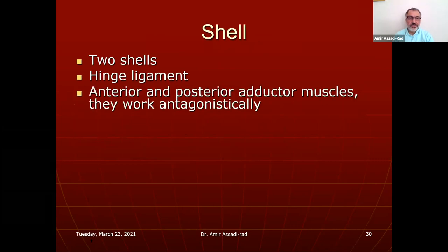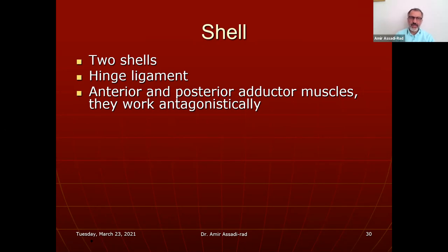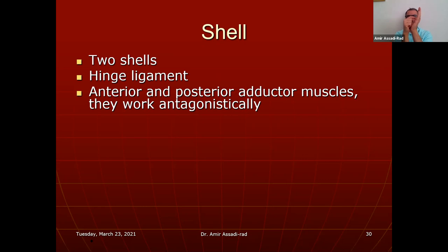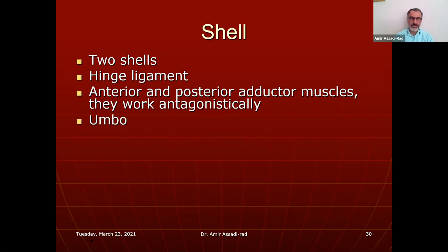Bivalves have two shells, hinge ligaments connecting them, and anterior and posterior adductor muscles that work antagonistically — when one contracts, the other relaxes. The umbo is the oldest portion of the bivalve shell — equivalent to the apex in gastropods. The shell layers are periostracum, prismatic, and nacreous.